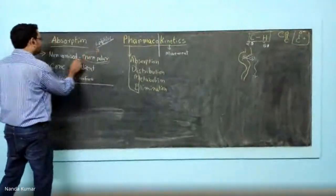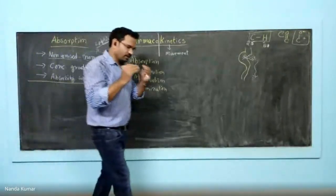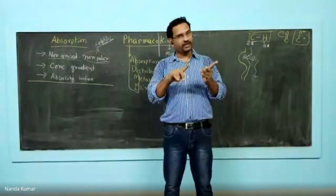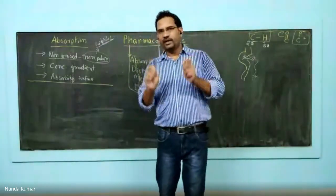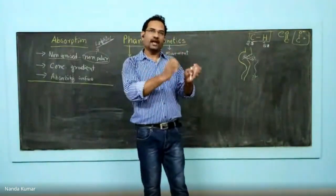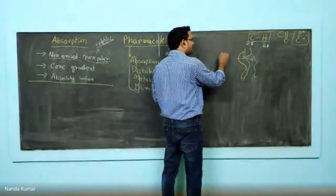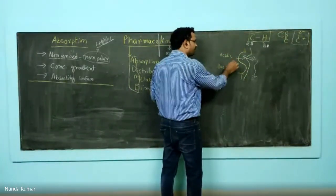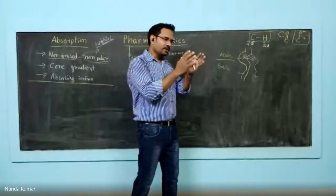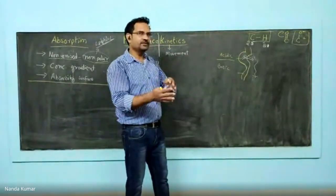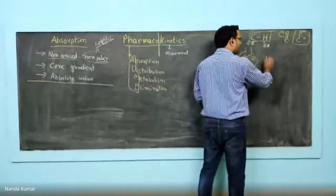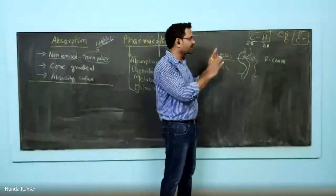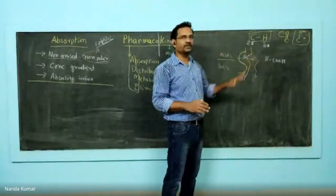Most drugs in the market are either weakly acidic or weakly basic. Body pH affects their ionization. In the stomach we have acidic pH, whereas in the intestine we have basic pH. This pH determines whether the drug is in ionized or unionized form. For example, a weak acid in acidic pH remains as such.